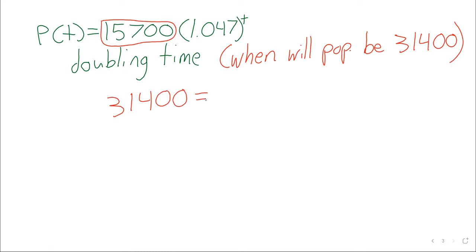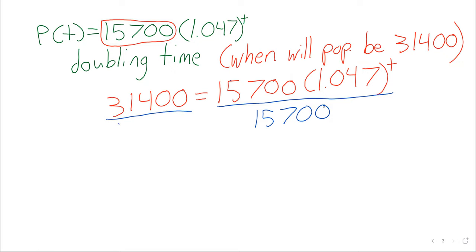31,400 equals 15,700 times 1.047 to the power of t. Once that equation has been set up, we're back to what we were doing yesterday: solving exponential equations. At some point we're going to want to take a logarithm, but we don't want to take any logarithms until the exponential is by itself. So this 15,700 is unwanted, and we can divide it away.